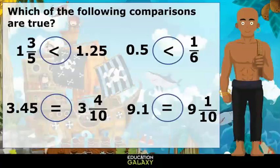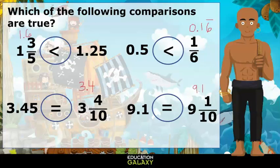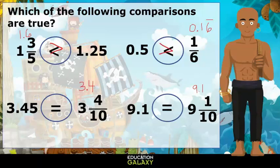Let's try one last problem. We want to see which of these comparisons is true. Let's turn all the fractions into decimals. 1 and 6 tenths is greater than 1 and 25 hundredths. 5 tenths is greater than 1 and 16 hundredths. 3 and 45 hundredths is greater than 3 and 4 tenths. But 9 and 1 tenth equals 9 and 1 tenth, so that must be our answer.